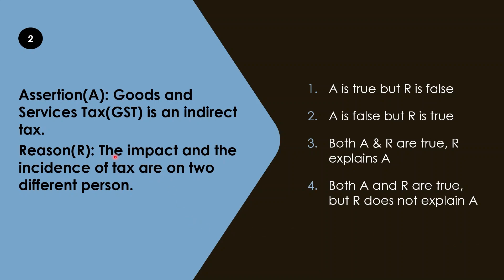Since R correctly explains why GST is an indirect tax, the correct answer is: both A and R are true and R explains A. I hope this is clear and you understand how to solve these step by step.